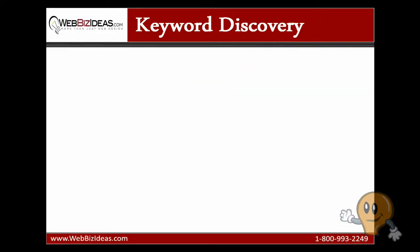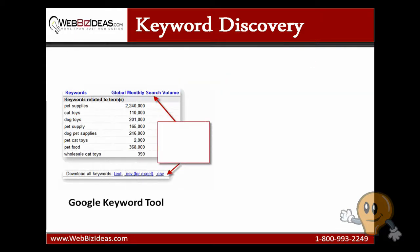The best free traffic estimator I have found comes from Google. If you Google the keyword phrase 'keyword tool', or just the word 'keyword', you will find Google's keyword tool that is pictured here. There are many tutorials out there on how to use it, so I will just make one recommendation: use exact sorting instead of broad.